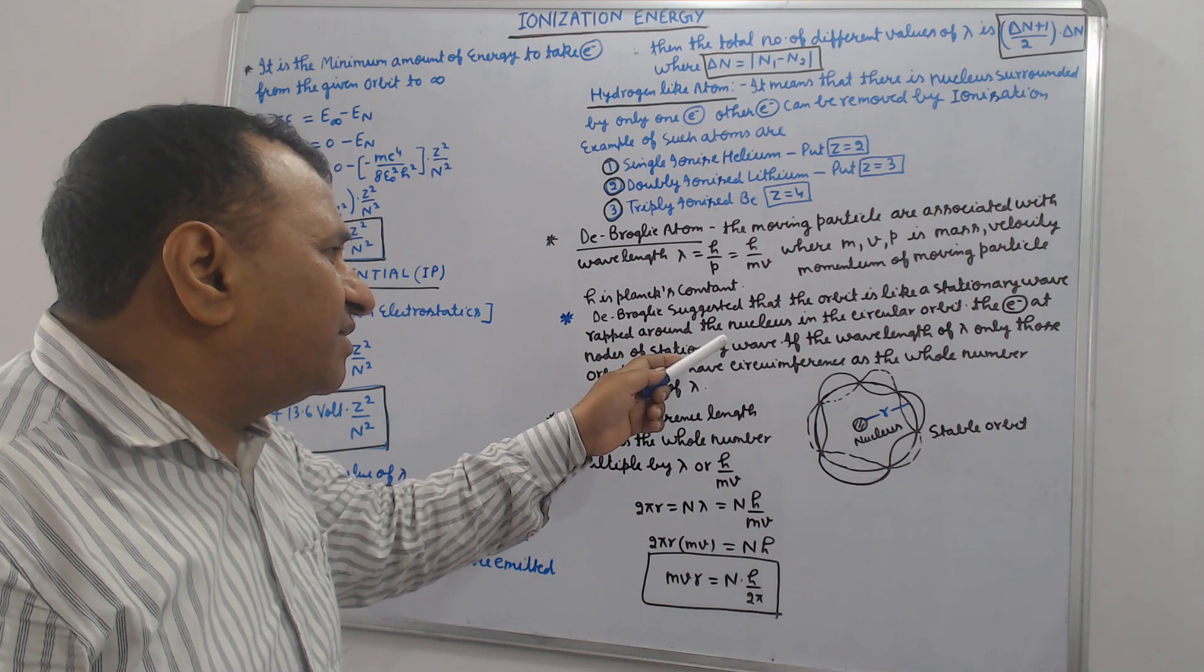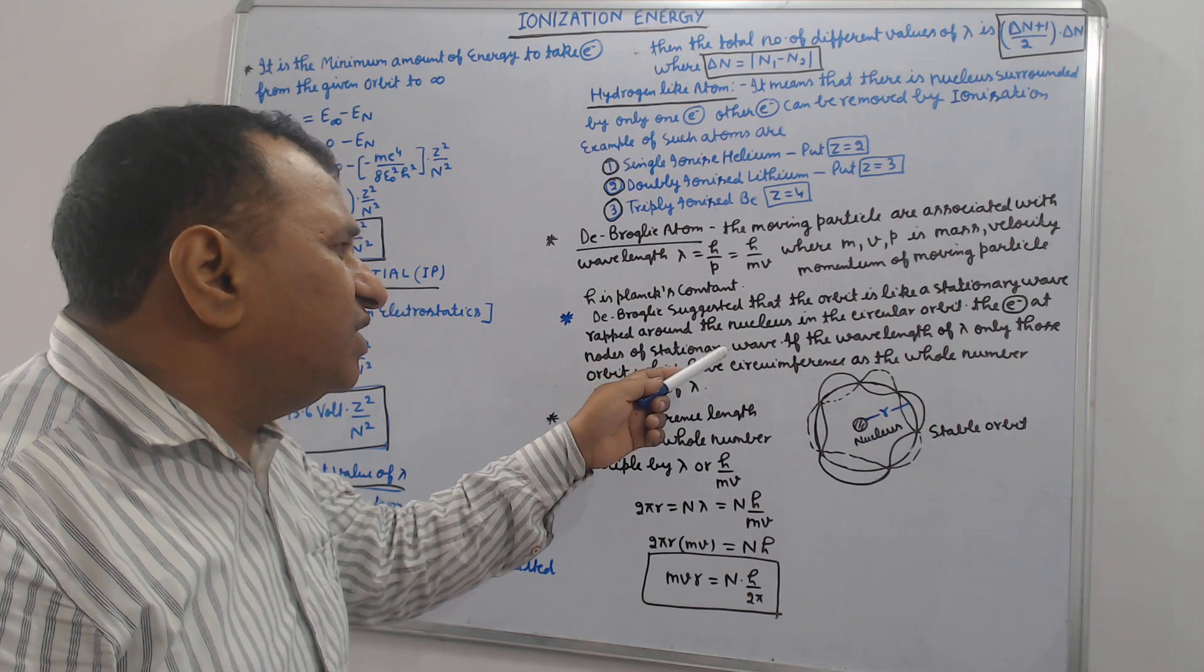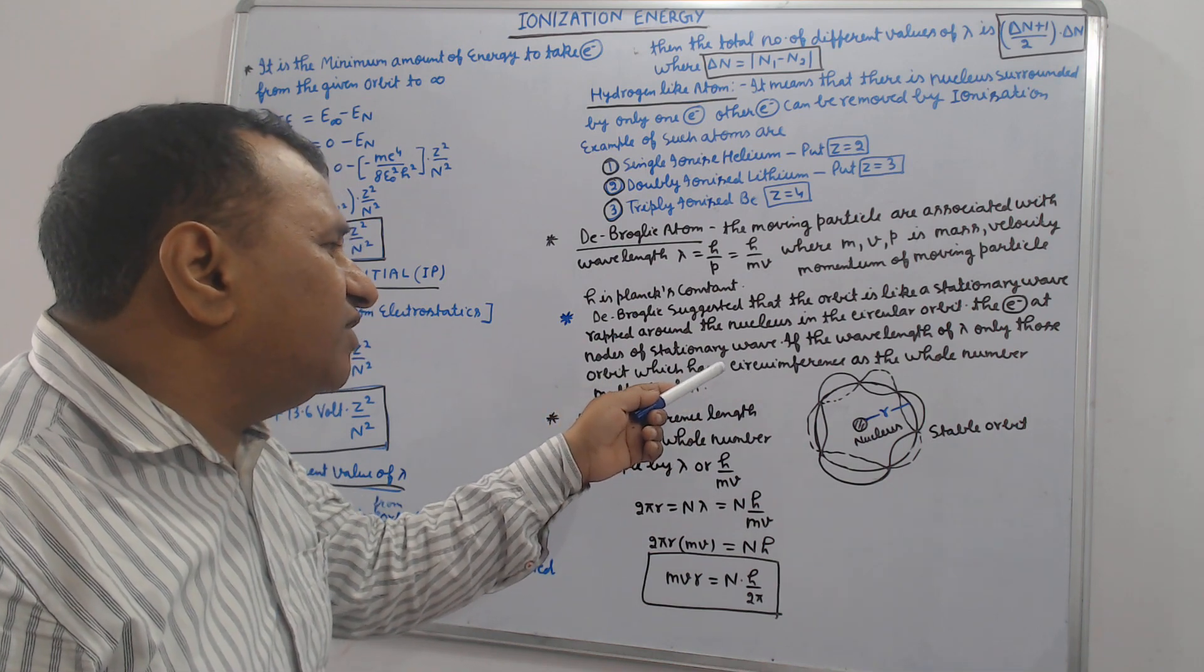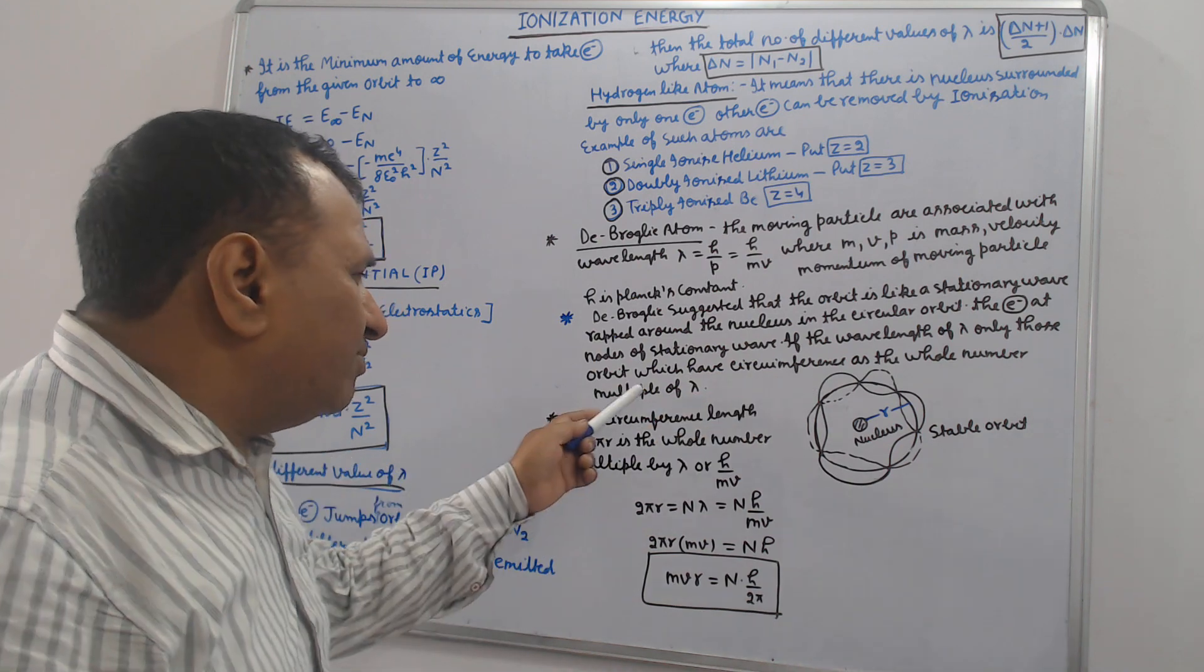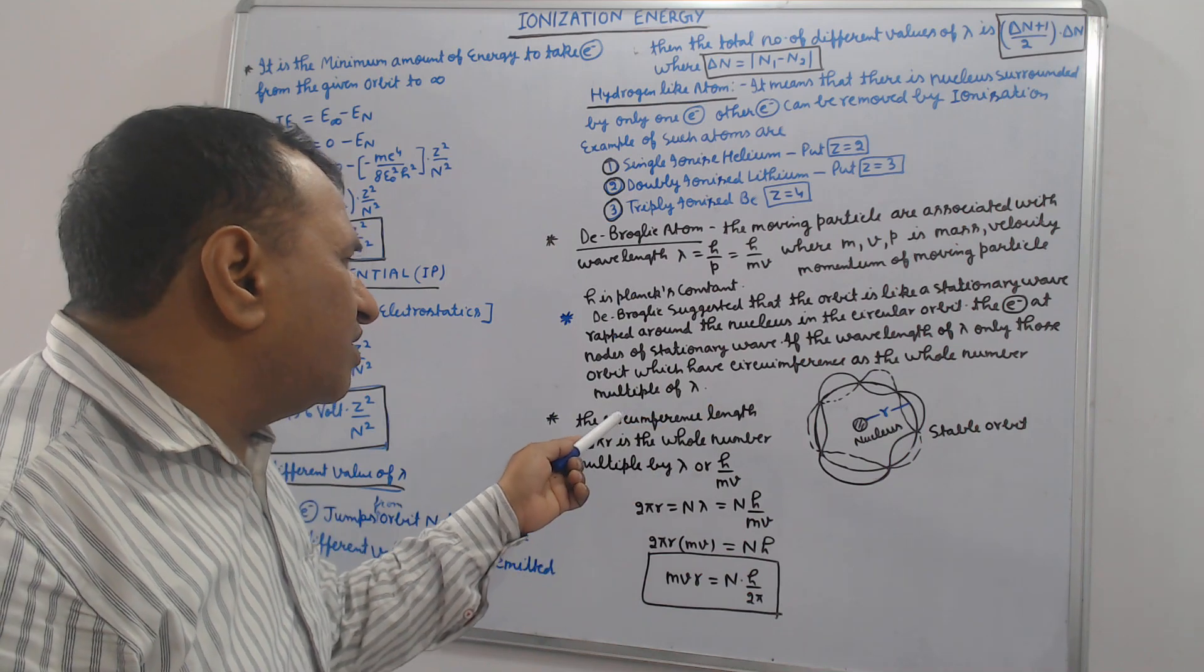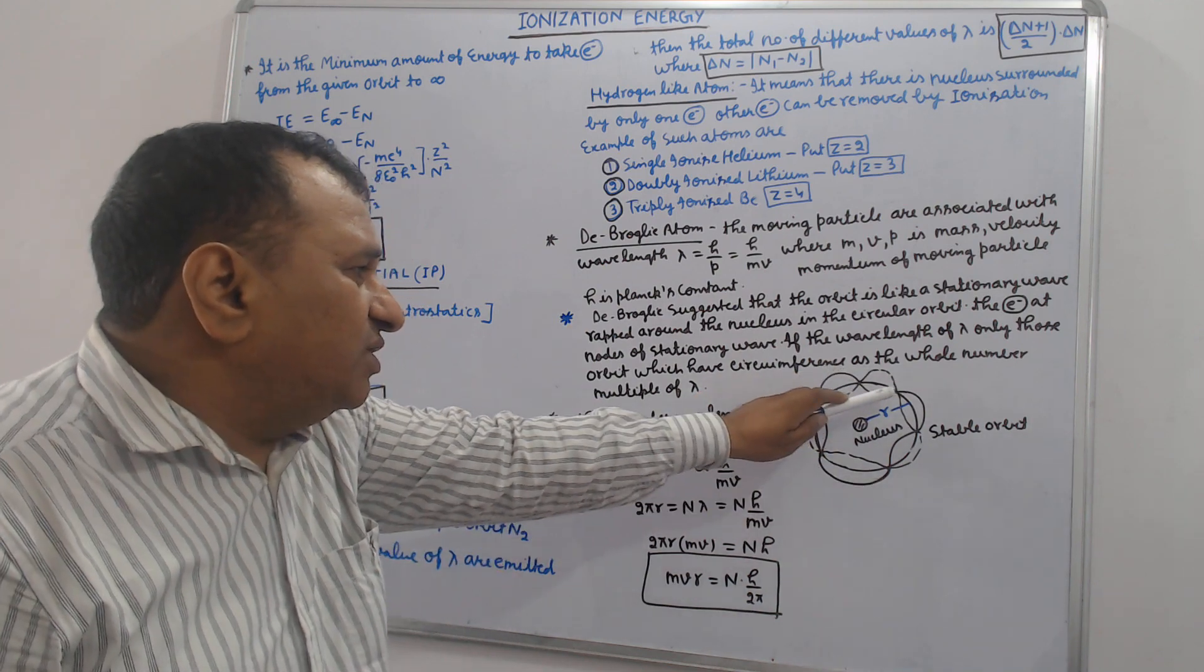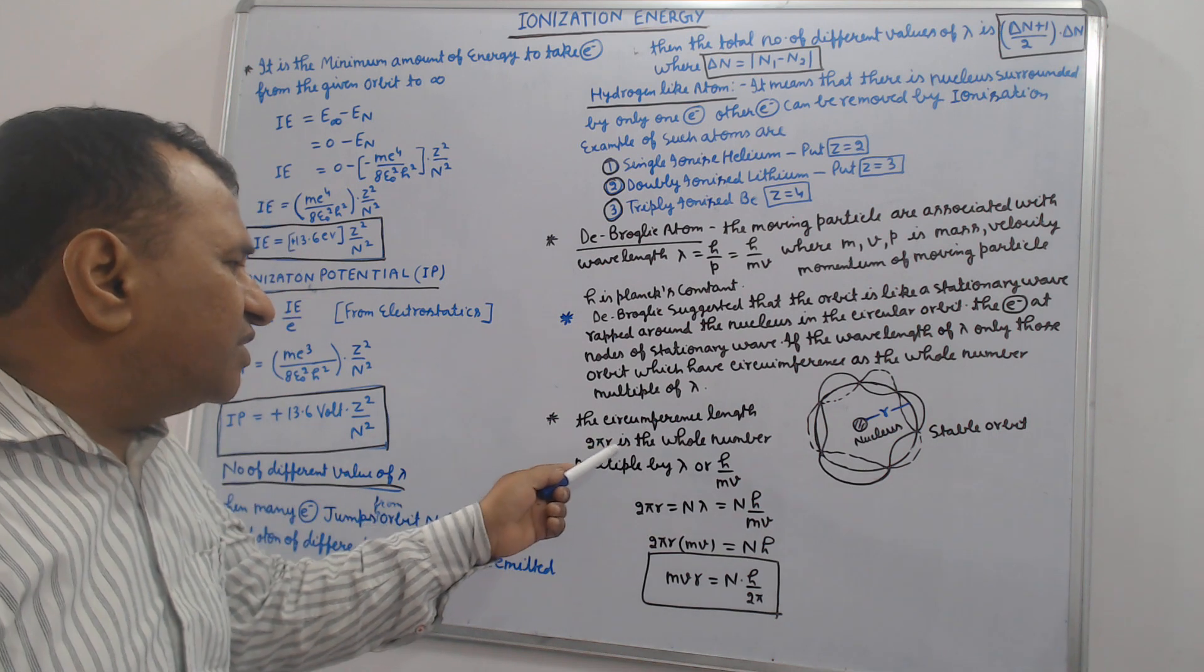de Broglie suggested that the orbit is like a stationary wave wrapped around the nucleus. In the circular orbit, the electron is at the nodes of stationary wave. If the wavelength is lambda, only those orbits which have circumference as the whole number multiple of lambda are stable orbits. The circumference length 2πR.